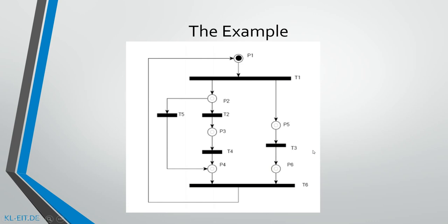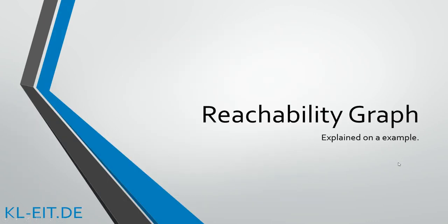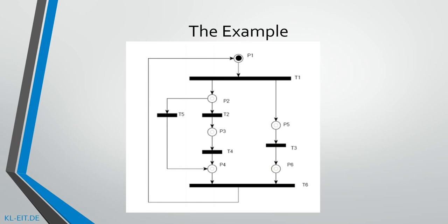In this tutorial I'm going to show you how to build a reachability graph of a Petri net. I'm explaining this by working through an example. Let's look at the example. We've got a Petri net with six possible places and some transitions.